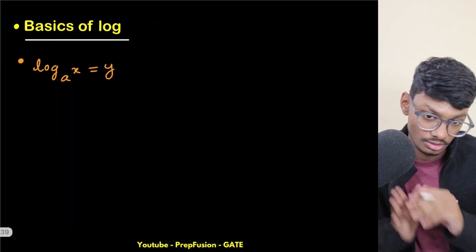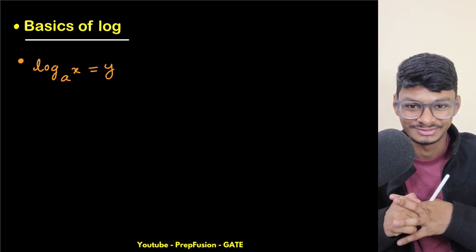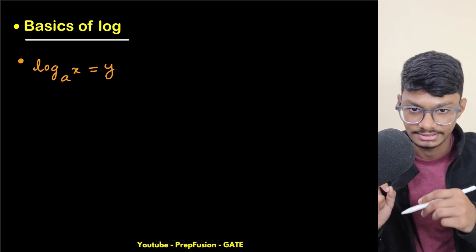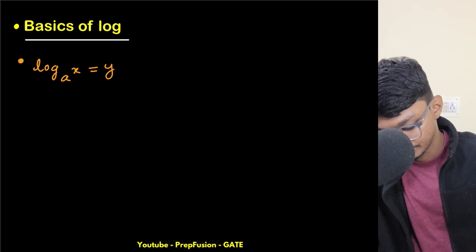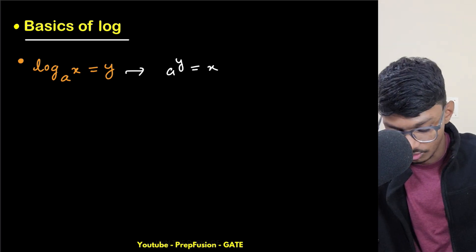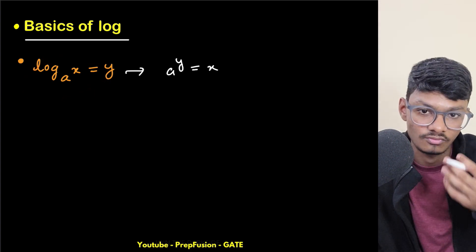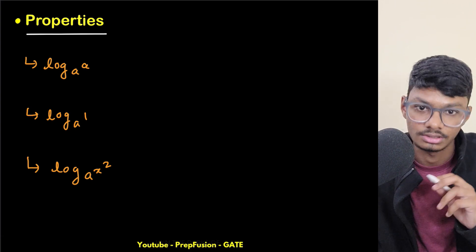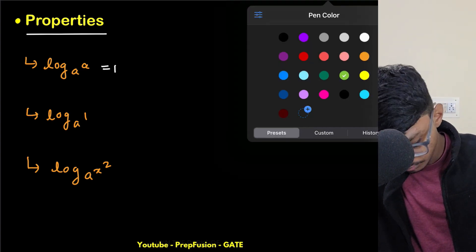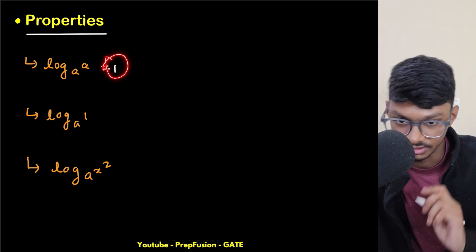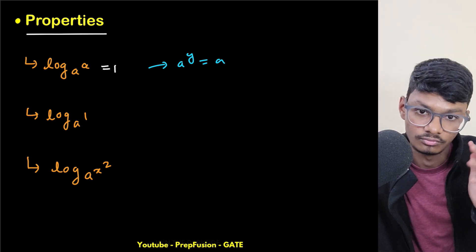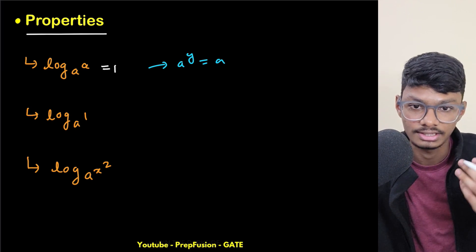Now let's come back to the basics of logarithm, which we studied in class 8 or 10. If log base a of x equals y, that means a raised to the power y equals x. That is the fundamental meaning of logarithm. Now let's understand a few properties. First: log base a of a equals 1, because a raised to power 1 equals a.